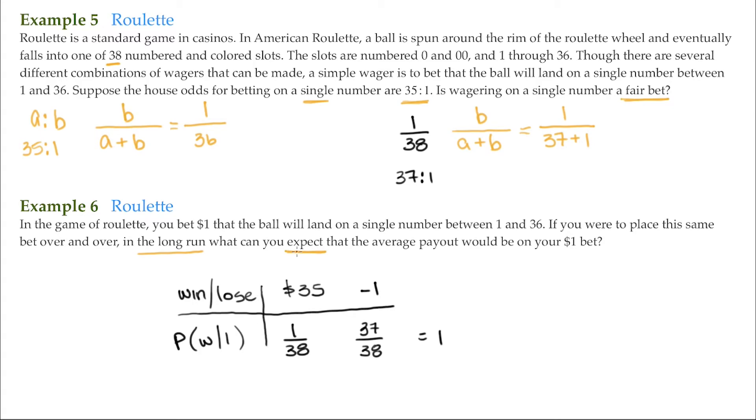So then what can I expect to win or lose in the long run? Well, we simply multiply these two together and then sum them up. So 35 times 1 out of 38, that's 35 out of 38. And then negative 1 times 37 out of 38, that's going to be negative 37 out of 38. We just tally them together: 35 out of 38 minus 37 out of 38, that's negative 2 out of 38, which is the same as negative 1 out of 19.